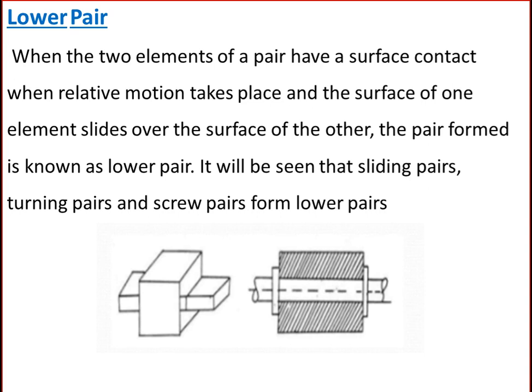Kinematic pairs are classified according to the type of contact between elements as lower pair or higher pair. When two elements of a pair have surface contact during relative motion, and the surface of one element slides over the surface of the other, the pair is known as a lower pair. Sliding pairs, turning pairs, and screw pairs form lower pairs.